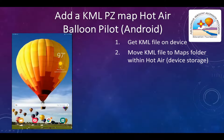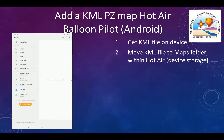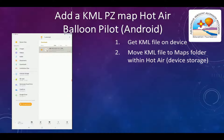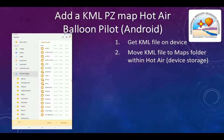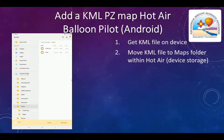we need to move the file to the Maps folder within the Hot Air app. Select the file, select Move, select Device Storage — not SD Card Storage — select Hot Air, select the Maps folder, and save the file there.